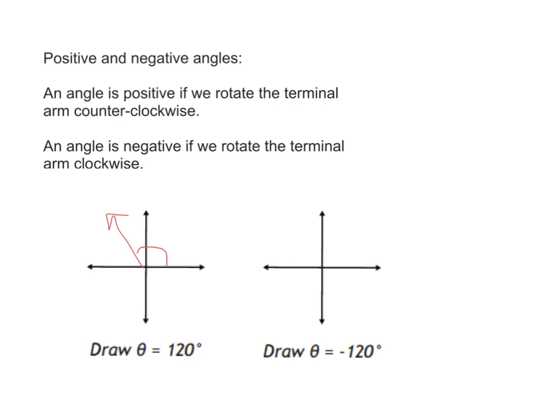Like quadrant 1, 2, 3, 4. 3. Negative 120 degrees would be like that. Okay.